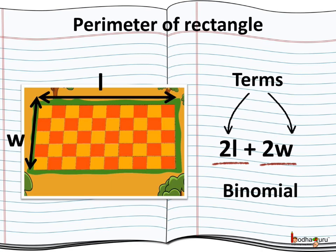Same way, tri means 3. We add the prefix like mono, bi, tri, etc., based on the number of terms in an expression. In general, an expression with many terms is called a polynomial.